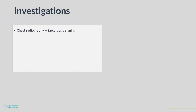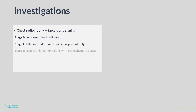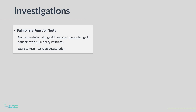Chest radiography has been used to stage sarcoidosis. A normal chest radiograph is stage 0. Hilar or mediastinal nodal enlargement only is stage 1. Nodal enlargement along with parenchymal disease is stage 2. Parenchymal disease only without lymphadenopathy is stage 3. Stage 4 shows pulmonary fibrosis. In patients with pulmonary infiltrates, pulmonary function testing may show a restrictive defect accompanied by impaired gas exchange.